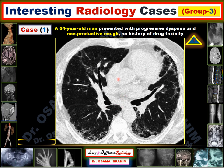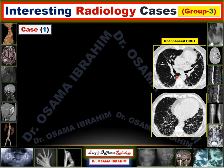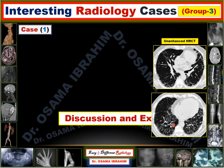First of all, what is the type of this examination? This is a CT examination done without contrast, showing the details of the lung, so it is called HRCT — high resolution CT — unenhanced, because it is done without contrast.